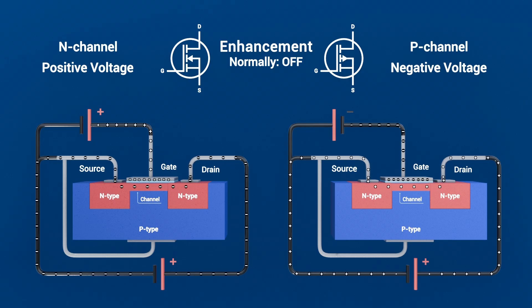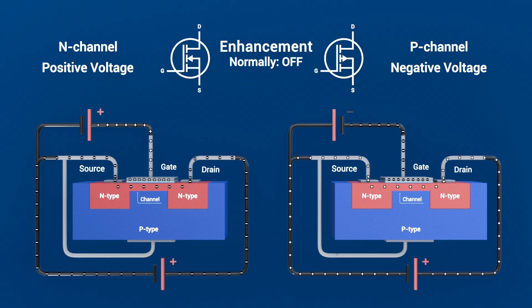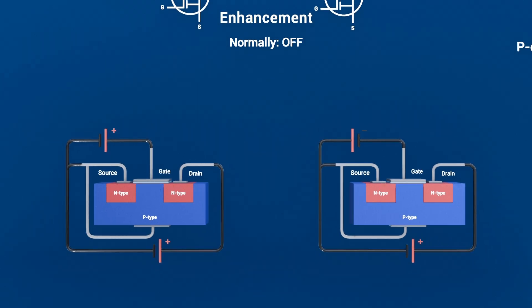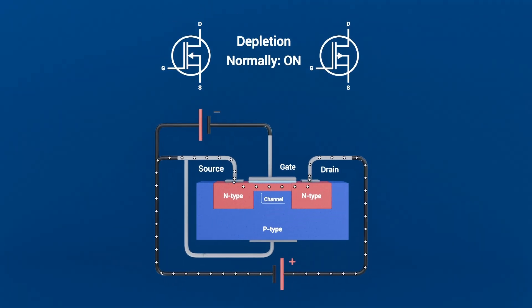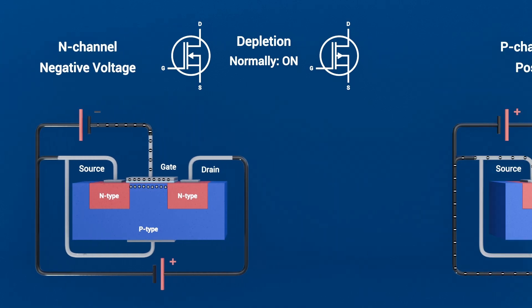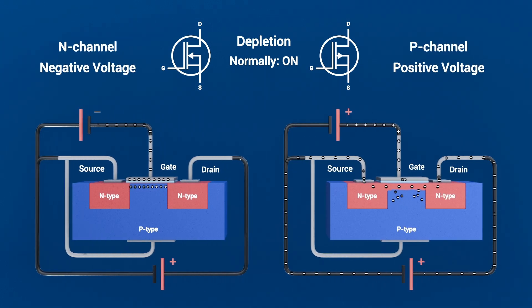This behavior makes Enhancement MOSFETs ideal as digital switches and power transistors, since you simply apply a gate voltage to turn them fully on or off. A Depletion Mode MOSFET is normally on — an intrinsic channel already conducts, and you must apply a reverse gate bias — negative for N-channel, positive for P-channel — to deplete the carriers, pinch off the channel, and switch it off.